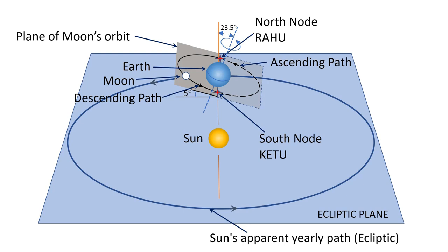Thus Rahu and Ketu are intersection points where Moon's orbital path crosses the ecliptic plane. The polarity of Rahu is considered as male and the polarity of Ketu is considered as neutral, and they both are considered to possess Tamas Guna.